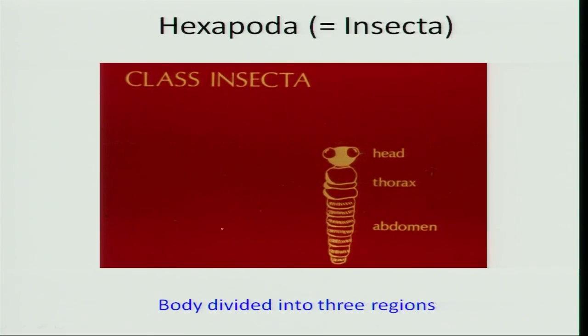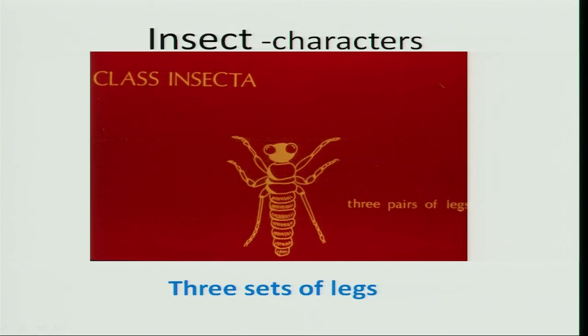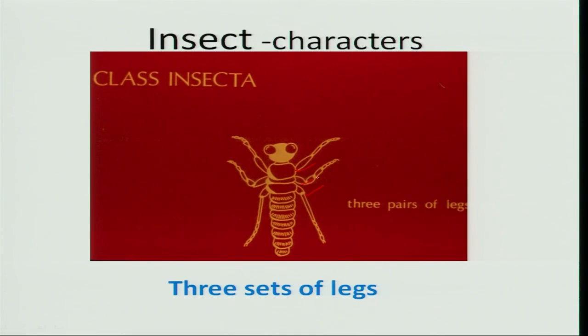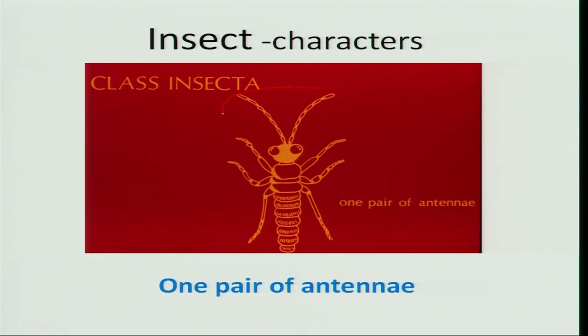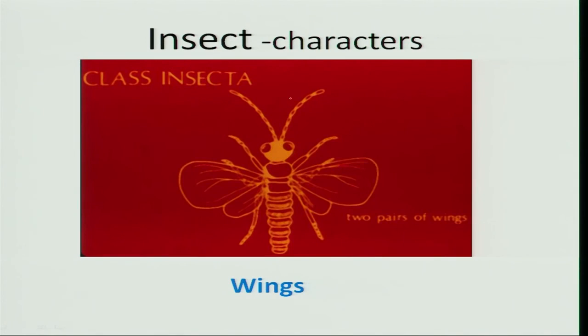How can we differentiate insects as a group from their sister groups? There are three to four basic characters by which anyone can identify an organism as an insect. Insects have three body divisions: head, thorax, and abdomen, which are easily distinguishable. All insects have three pairs of legs, or six legs — that is why they are referred to as hexapoda, where 'hexa' means six and 'poda' means legs. Each pair of legs arises from each thoracic segment. They also have a pair of antennae on the head, which act as sensory structures. Majority of insects possess wings — either one pair or two pairs — and with these characters it is quite possible to identify the insects.